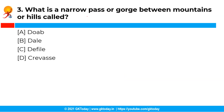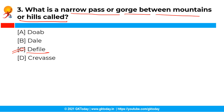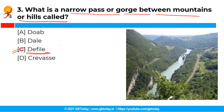The next question is: What is a narrow pass or gorge between mountains or hills called? The correct answer is option C, that is defile. Defile is a narrow pass or gorge lying between the mountains or hills, and it is a type of a sloped landform.